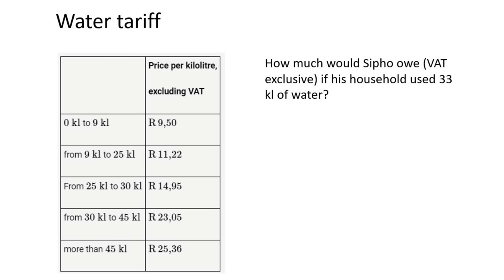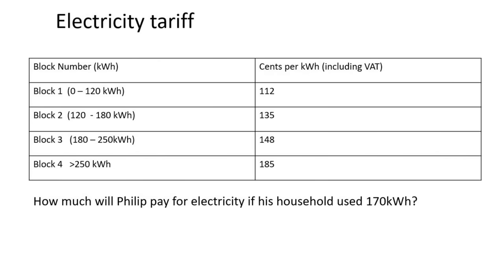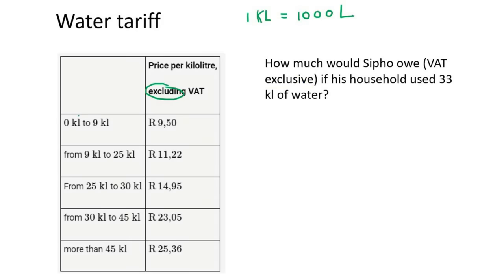Water is measured in kilolitres — one kilolitre is the same as 1,000 litres. They give you the price per kilolitre, so this is 9.50 and it excludes VAT. It's very important when you sit with your exam question to check whether VAT is included or excluded. For this lesson we will assume that all VAT is 15%.